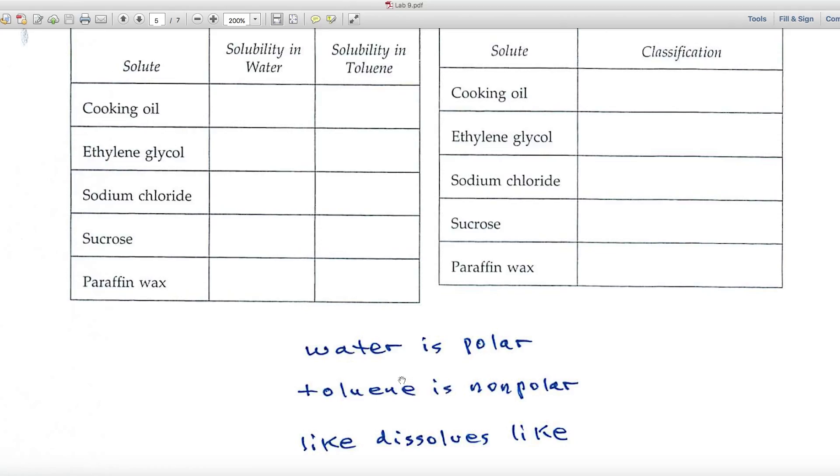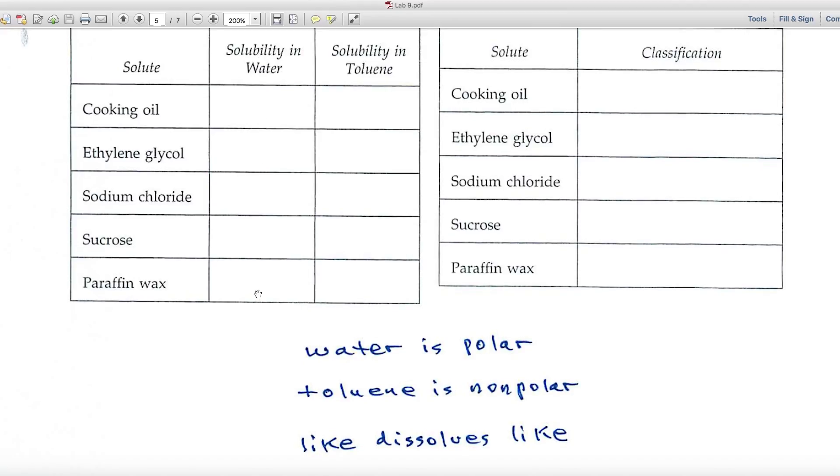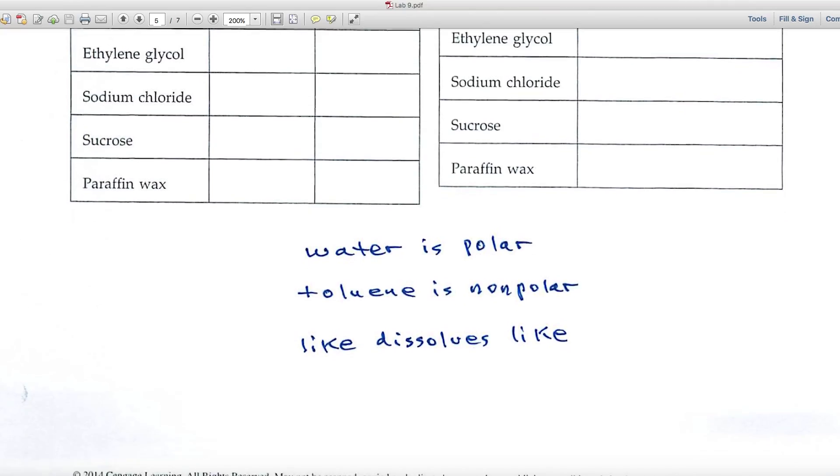And what we mean by this is that polar substances, like water, like other polar things and dissolve them well. But they don't like nonpolar things. Then if I talk about nonpolar things, nonpolar likes nonpolar. And so we can tell if something dissolves in water, then that tends to indicate that it's polar. If something dissolves in toluene, that indicates that it's nonpolar. And over here in the report part, you'll use the letter P for polar and N for nonpolar, based upon the solubility data back here.